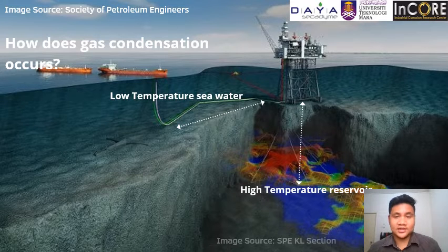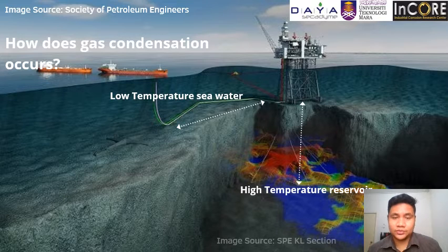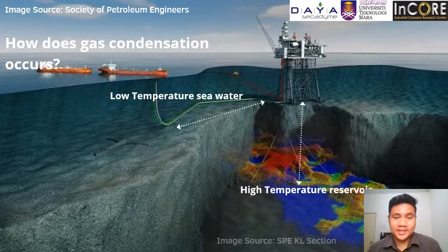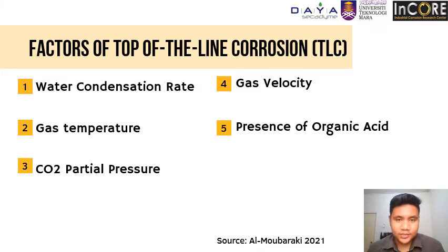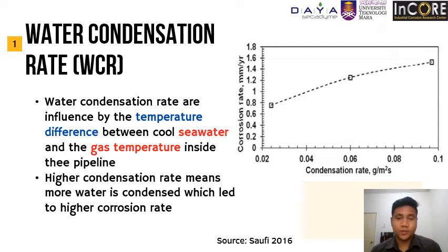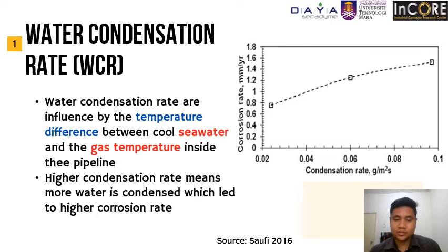How does TLC occur in the first place? The hot fluid from the reservoir is extracted by the oil rig and then passed to the tanker by means of subsea pipeline. This subsea pipeline is surrounded by cool seawater. This temperature difference initiates heat transfer from the fluid inside the pipeline to the seawater until equilibrium is achieved. The first factor contributing to TLC is the water condensation rate, or WCR, which is highly influenced by this temperature difference. When more water condenses at a time, more TLC will occur. Higher condensation rate of water leads to higher corrosion rate, as shown in the profile on the right image.